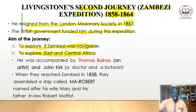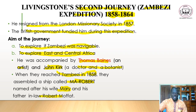He was accompanied by Thomas Baines, who was an artist, and John Kirk, who was a doctor and botanist. When they reached the mouth of the Zambezi in 1858, they assembled a ship called the Ma Robert — named after his wife Mary, who was the daughter of Robert Moffat. The ship was assembled at the mouth of the Zambezi River to explore it.